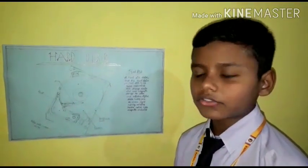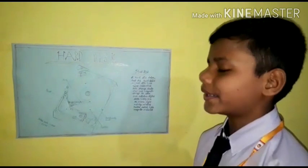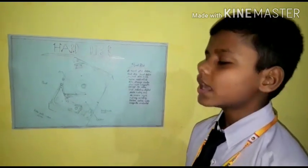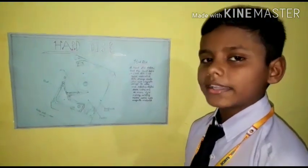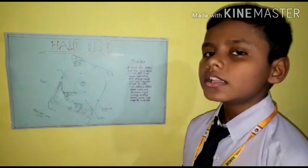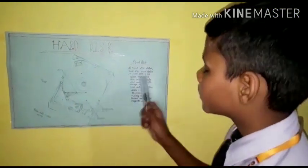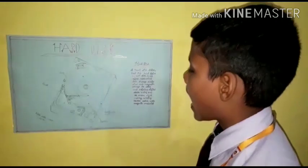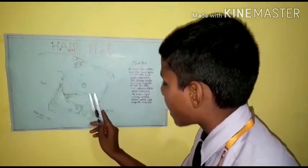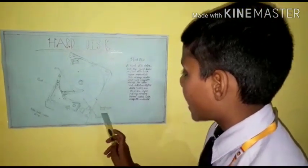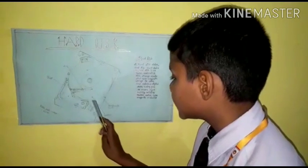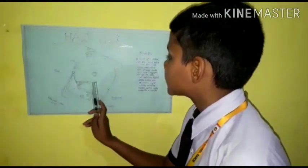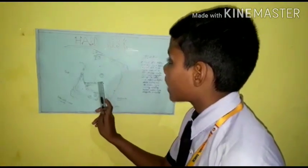Now let us know about the parts of the hard disk. This is a disk, and this part is the read/write heads. And this is the platter. And this part is the arm.